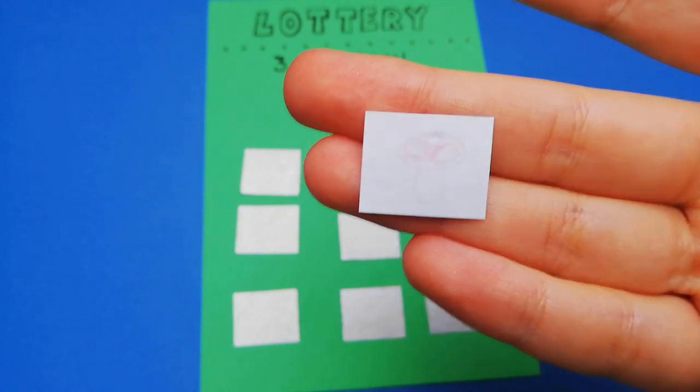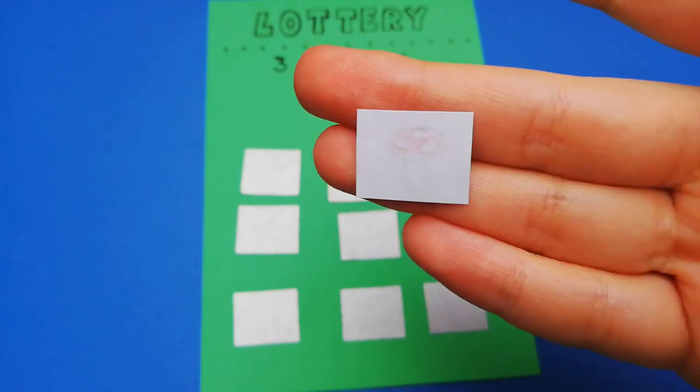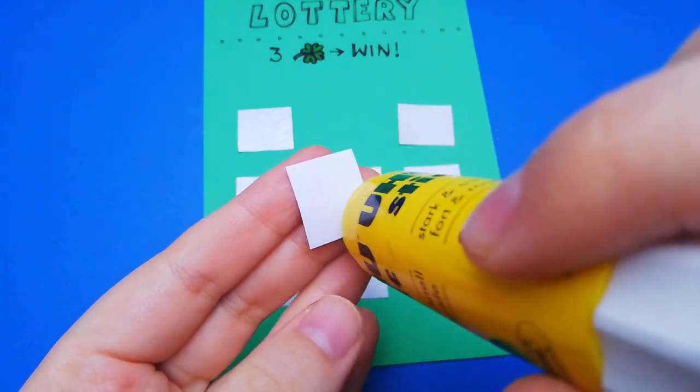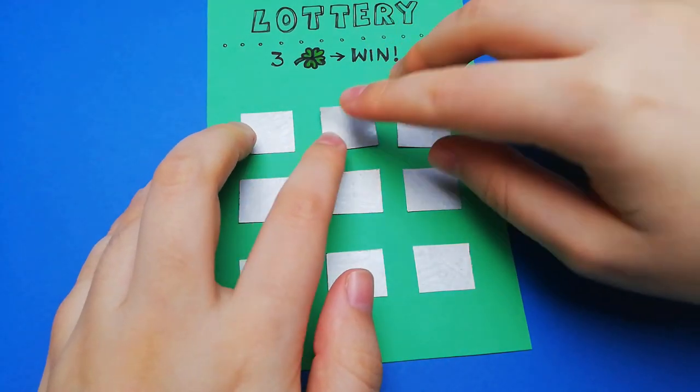Another reason I chose thinner paper is so I can see which side is the right side up. And I'm just using a glue stick to glue my symbols to the lottery ticket.